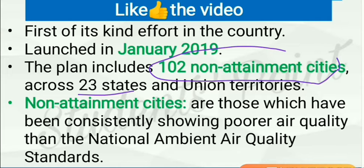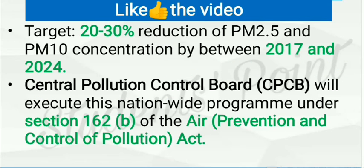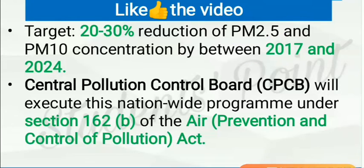The program aims to include 102 non-attainment cities across 23 states and union territories. Non-attainment cities are those which have been consistently showing poor air quality compared to national ambient air quality standards. The target is to reduce 20–30% of particulate matter 2.5 and particulate matter 10 by 2024. CPCB will execute this nationwide program under Section 162 of the Air Act.